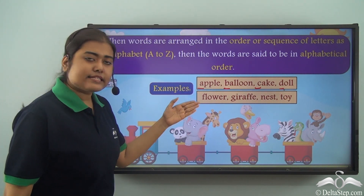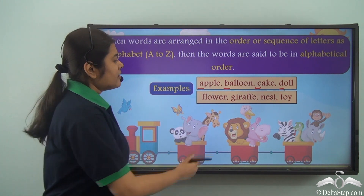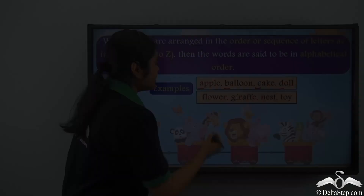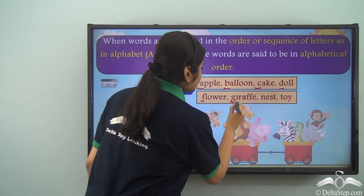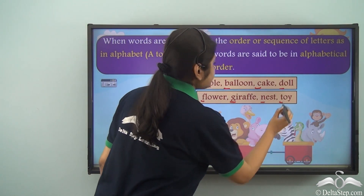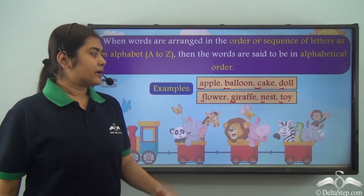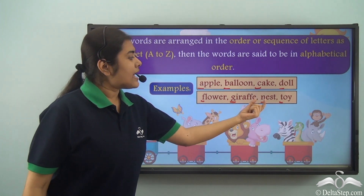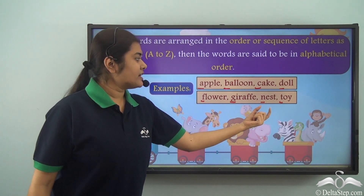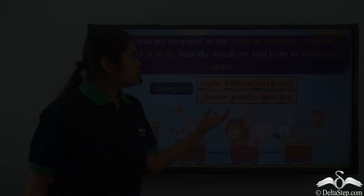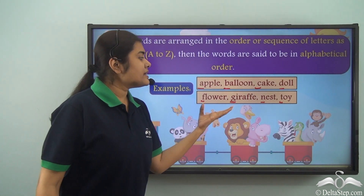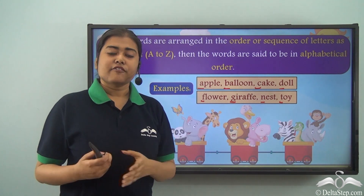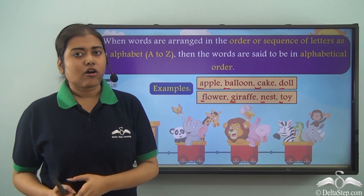Now look at the second set of examples. We have flower, giraffe, nest and toy. Here we have F, G, N and T. F comes before G, N comes after G, and T comes after N. So in this case as well, these words — flower, giraffe, nest and toy — follow the alphabetical order.